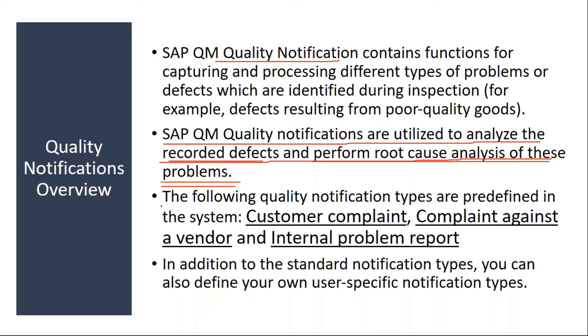The following quality notification types are predefined in the system: customer complaint, complaint against vendor, and internal problem. So we have three types.